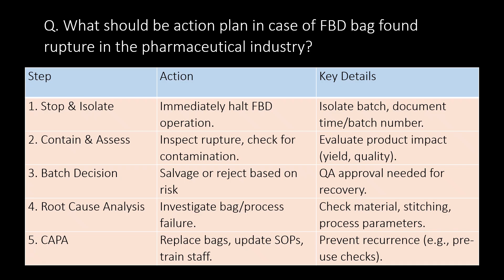Very important question: what should be the action plan in case an FBD bag is found ruptured in the pharmaceutical industry? Step 1: Stop and isolate — immediately halt FBD operation. Step 2: Contain and assess — inspect the rupture and check for contamination. Step 3: Batch decision — salvage or reject based on risk. Step 4: Root cause analysis — investigate bag or process failures. Step 5: CAPA actions — replace bags, update SOPs, and train staff.